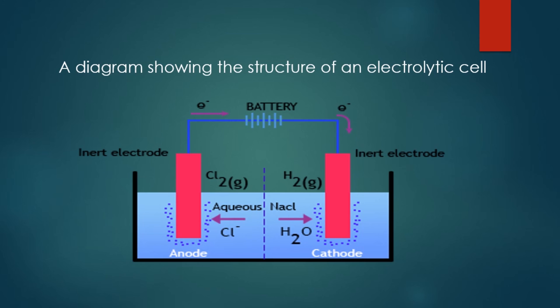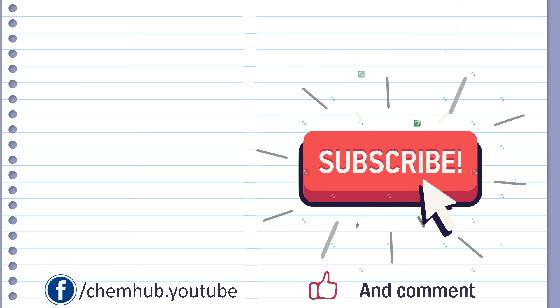Okay guys, here is a total recap of what we've learned today. In the galvanic cell, the reaction proceeds spontaneously. And in the electrolytic cell, it proceeds non-spontaneously.